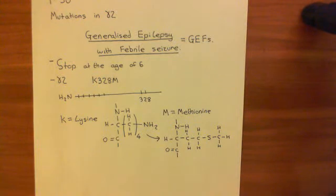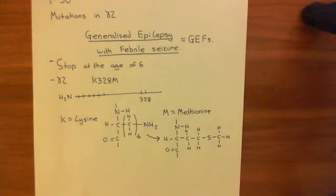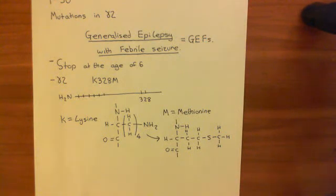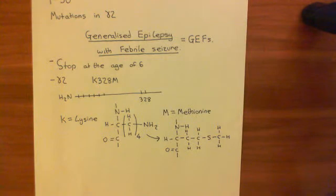If you reduce the inhibitory postsynaptic currents, then the excitatory postsynaptic currents are not going to be neutralized, and you get over-excitation of neurons within the brain. A huge number of neurons fire that shouldn't, and that leads to the convulsions in generalized epilepsy with febrile seizures.